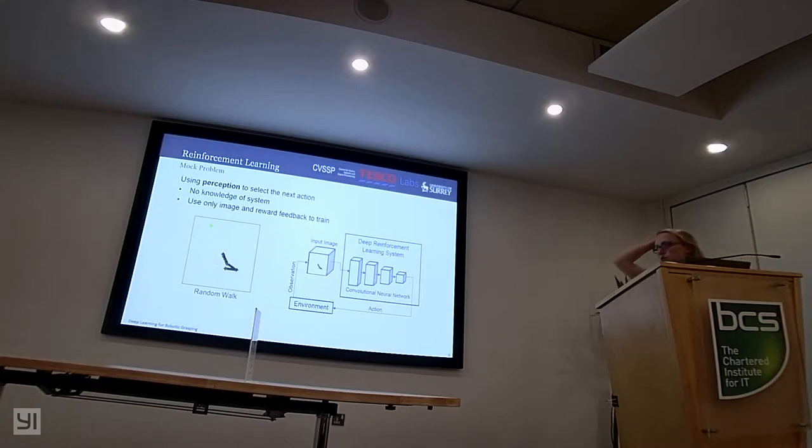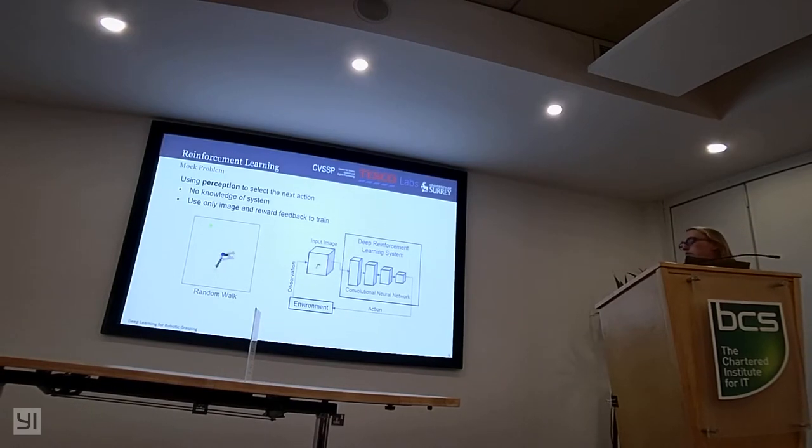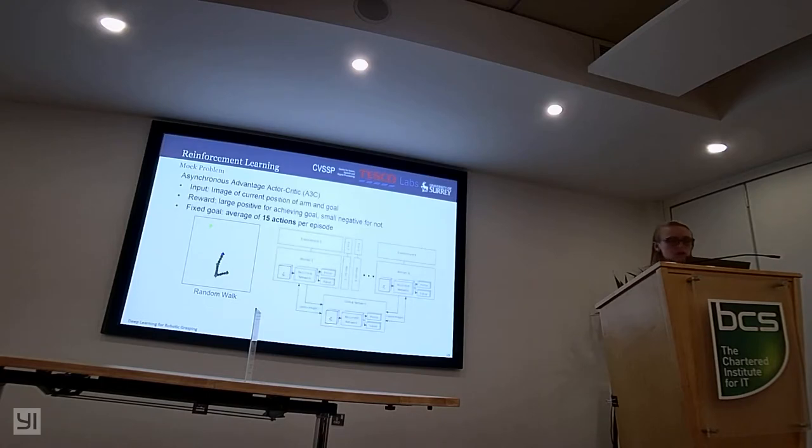However, when we started placing the goal randomly at the beginning of each episode, we found it didn't converge well at all. So we used curriculum learning, which is inspired by how we learn with children, starting with a simple problem, gradually making it more and more complex. For this problem, we started by placing the goal into one segment of the play space, and then gradually increasing the area available to it. We showed that it dramatically increased performance, allowing us to get to the same level as the fixed goal, but with the goal being placed wherever it wants in the area.